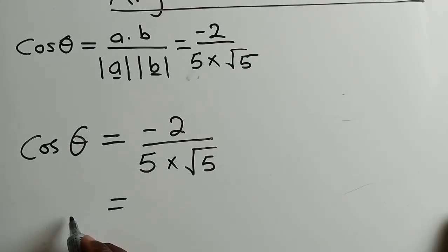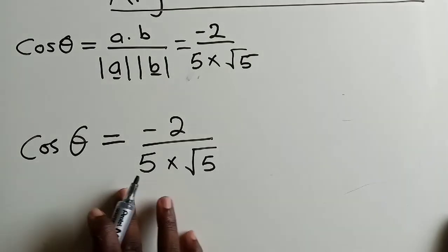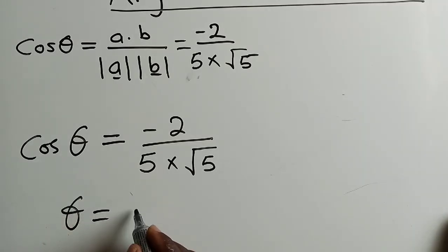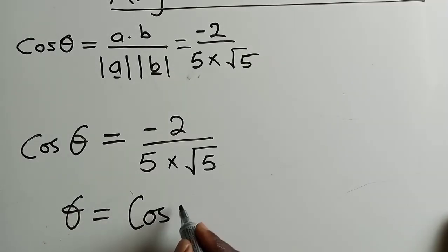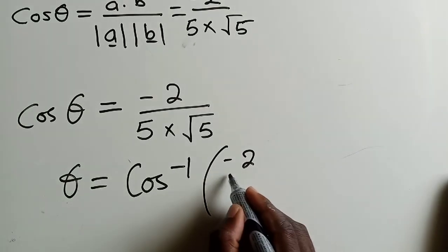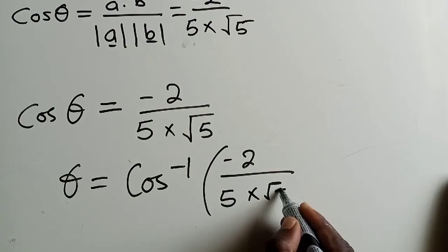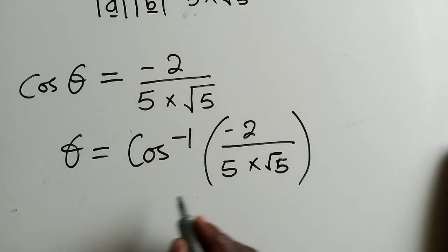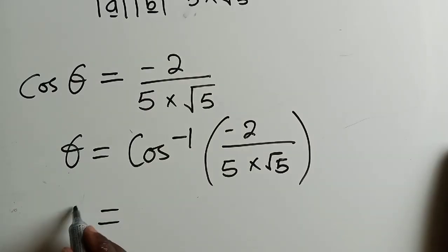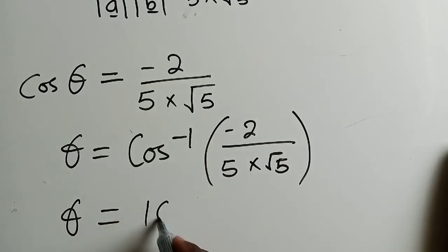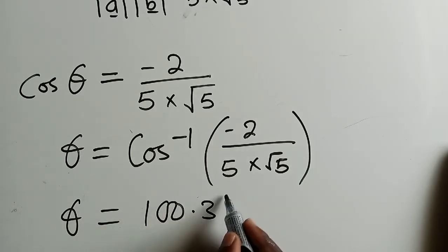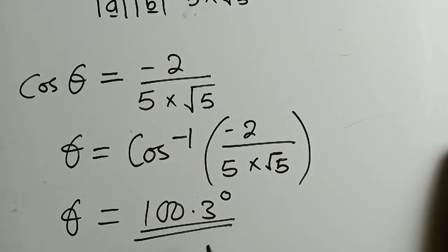When we punch here on our calculator, we say theta is equal to, we punch cos inverse of negative 2 over 5 times the square root of 5. We are finding our answer to be equal to 100.3 degrees. This is the angle which is between the two vectors.